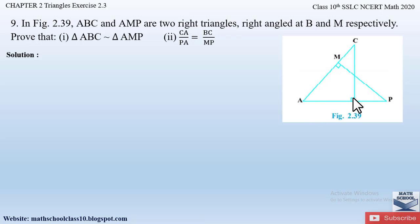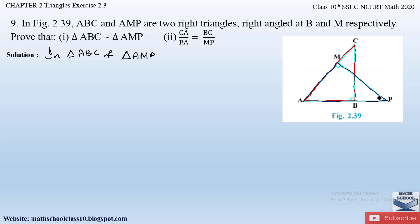We have to prove that triangles ABC and AMP are similar. We will consider these two triangles and write: in triangle ABC and triangle AMP, if you notice, angle M and angle B are both 90 degrees, which is already given in the question. So we write angle ABC = angle AMP = 90 degrees.